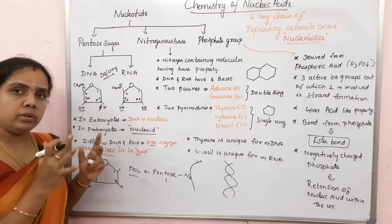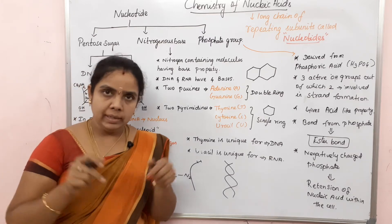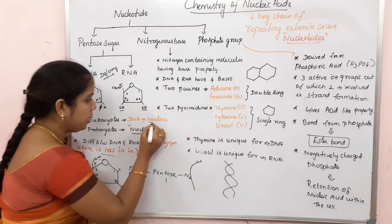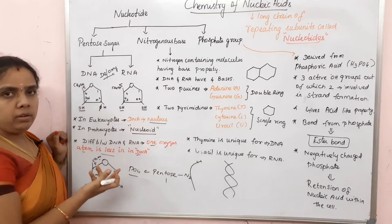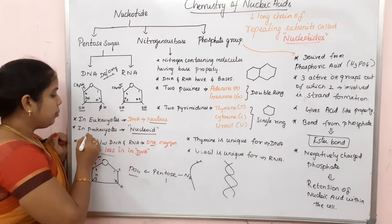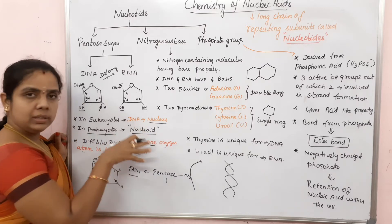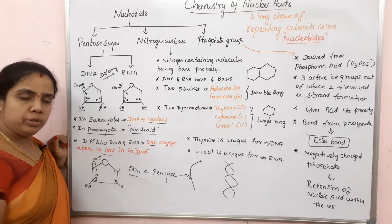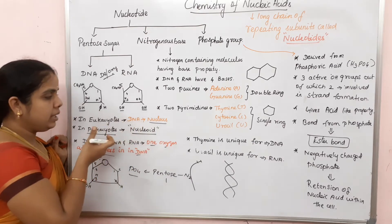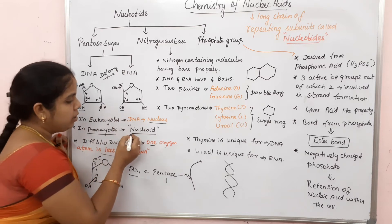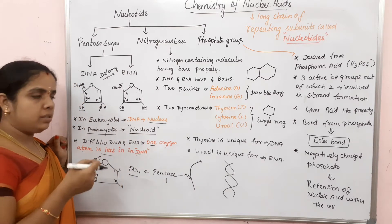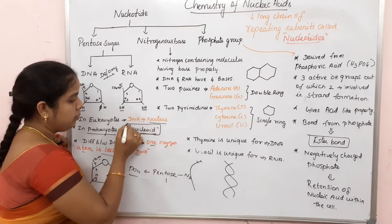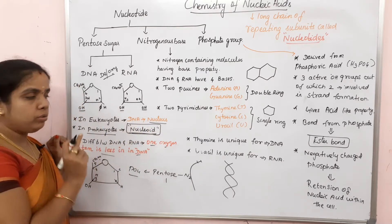Where is DNA? In eukaryotes, there is a nucleus in the cell, and DNA is inside the nucleus. In prokaryotes, there is no proper nucleus - it is a primitive nucleus, not well-developed. So in prokaryotes, the genetic material is located in the nucleoid region. This may be asked in a one-mark question, so note it down.